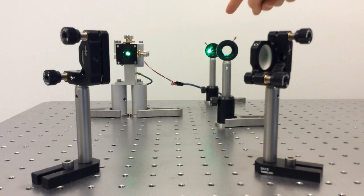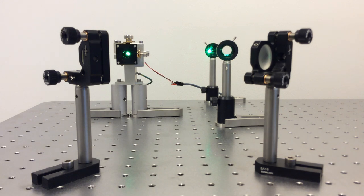I want my beam to go through these two pinholes. As a rule, the first mirror acts on the first pinhole and the second mirror acts on the second pinhole.